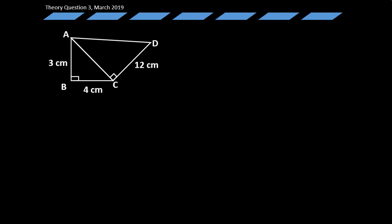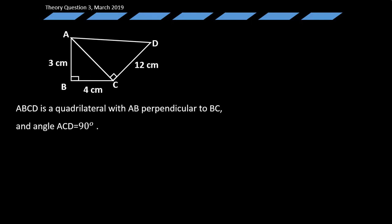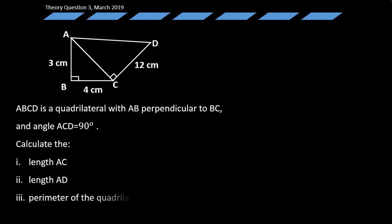Now let's look at the question. The diagram shows that ABCD is a quadrilateral with AB perpendicular to BC, and angle ACD equal to 90 degrees. We are asked to calculate: (I) length AC, (II) length AD, and (III) the perimeter of the quadrilateral.